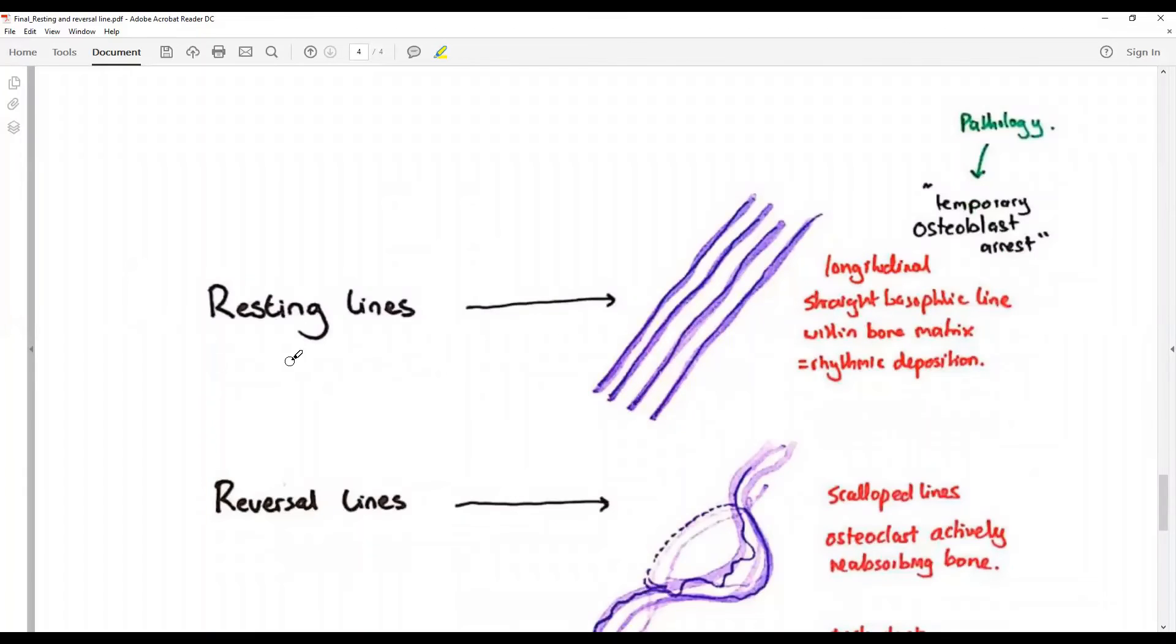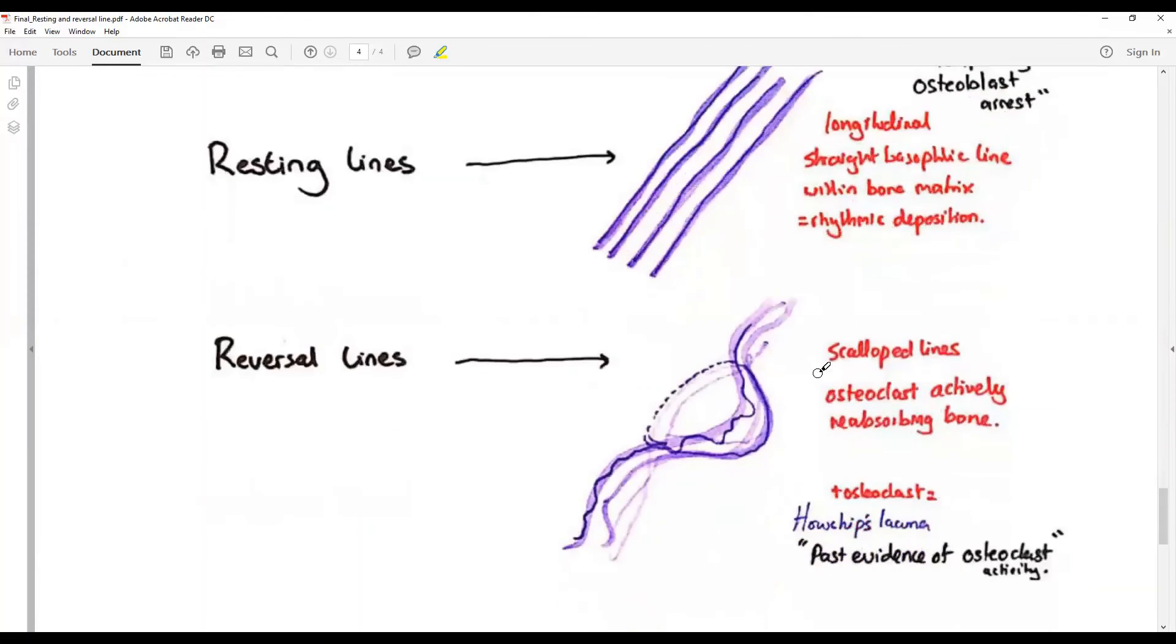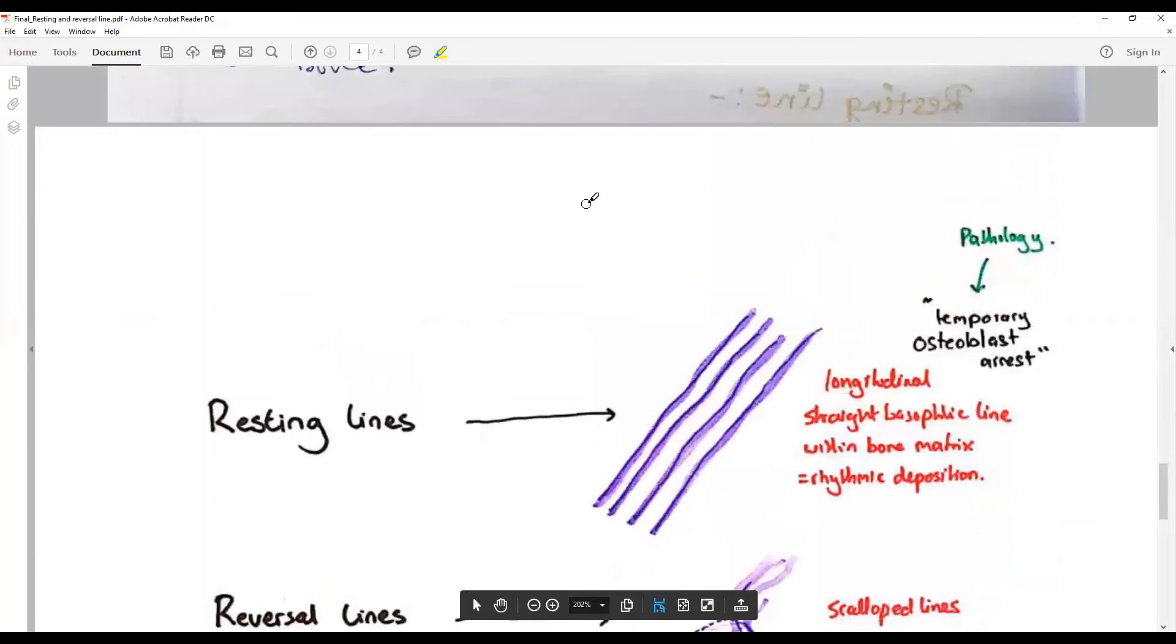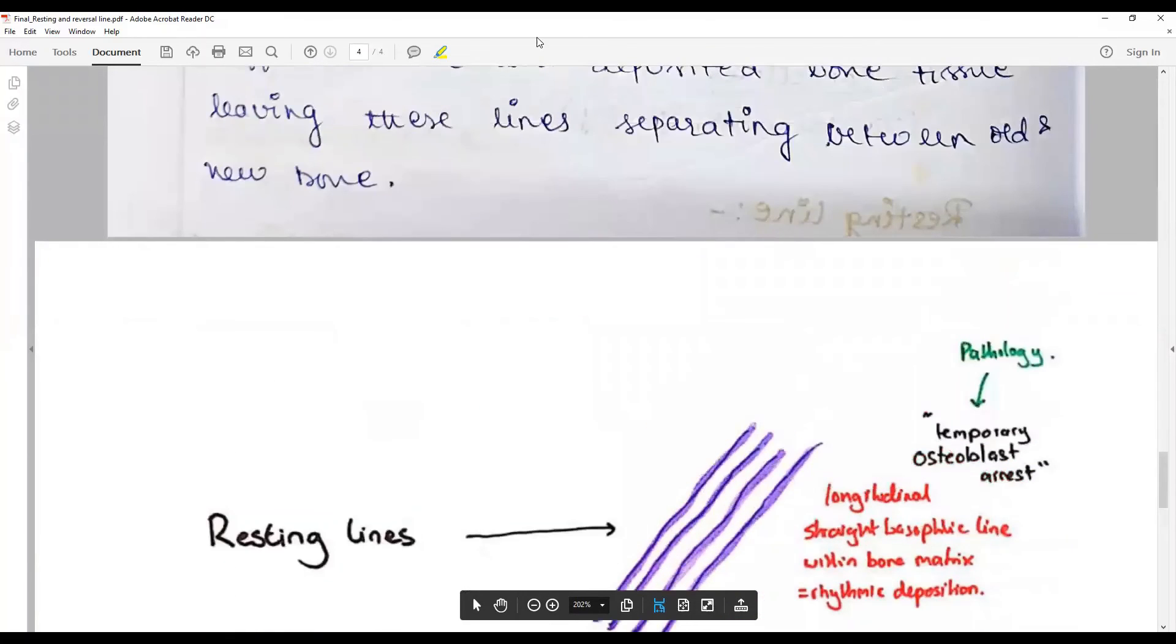The diagram that I expect as a teacher is: resting lines shown with shading, longitudinal straight basophilic lines within bone indicating rhythmic deposition, a temporary osteoblastic arrest. If there is pathology, if there is temporary osteoblastic arrest, the reversal line will be a scalloped line indicating osteoclastic activity, actively resorbing bone, evidence of osteoclastic activity.